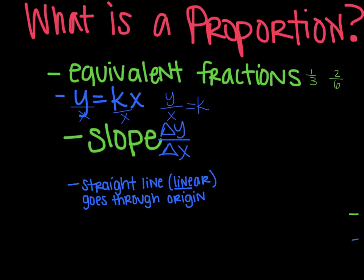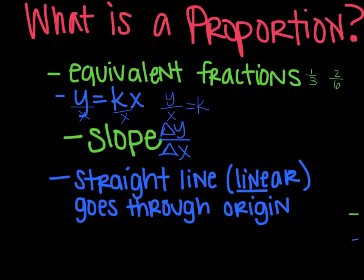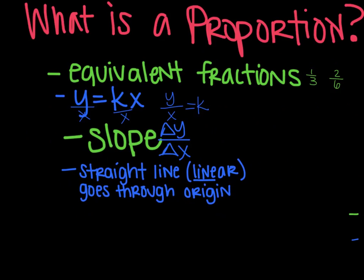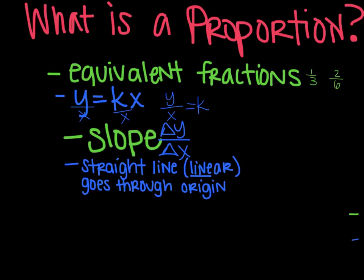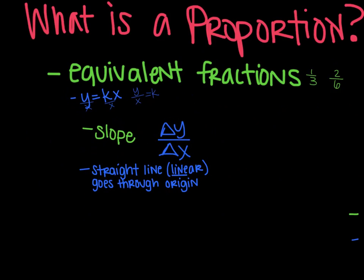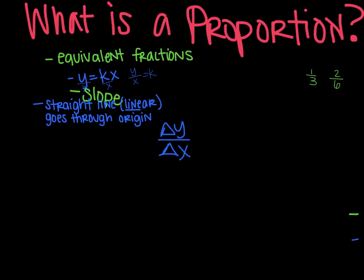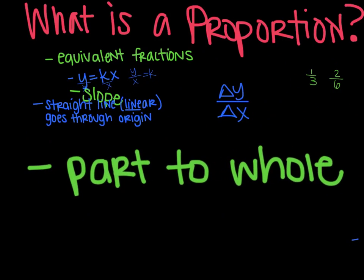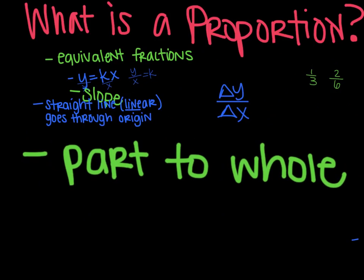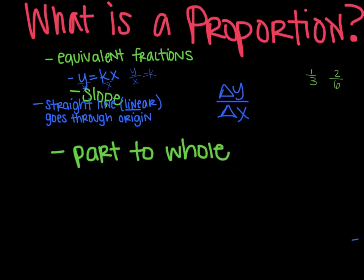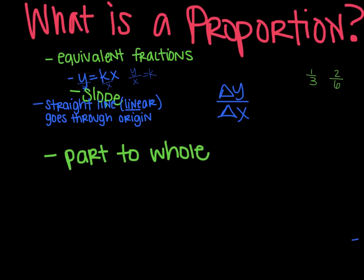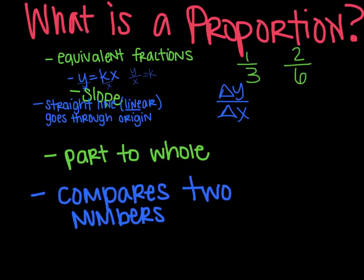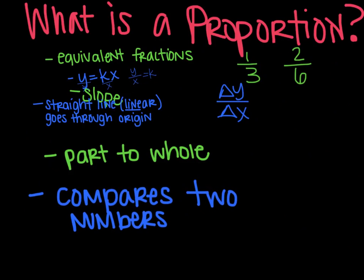Proportions are also a straight line, linear, is what that means, or line r, if you want to remember it. And it goes through the origin, which is zero, zero. It is a part-to-whole relationship, so you can think of it comparing a part to a whole. And that has to do with going back to the fractions. For example, one-third, the part and the whole aspect there was a way you can see that. And then lastly, a proportion compares two numbers.